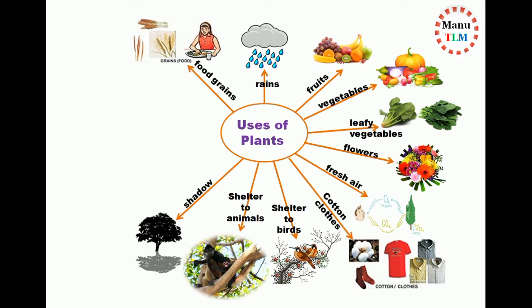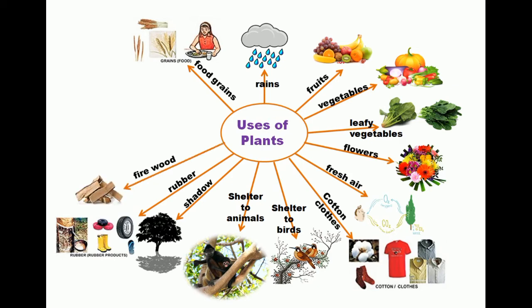Plants give shade. Plants such as rubber plants provide rubber. Plants provide firewood. Plants provide strong wood to make furniture.